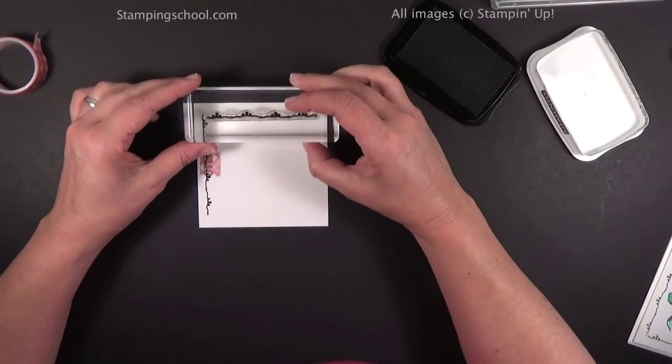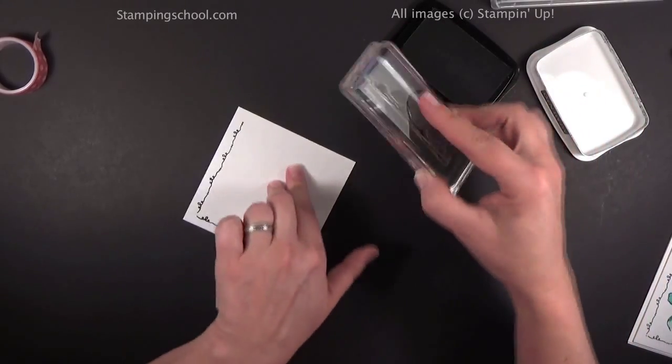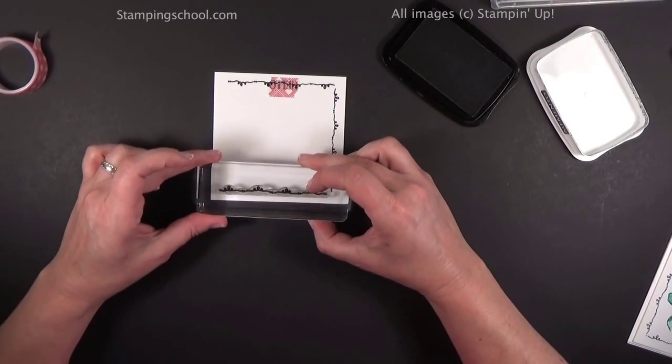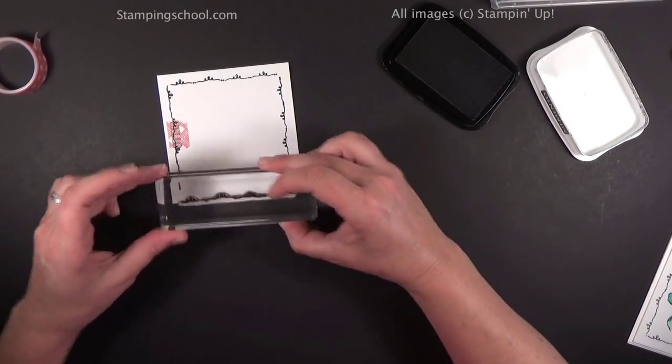This is a photopolymer stamp set, so it's great because you can see exactly where it's going. Go around all the way around. Like I said, it's just the perfect size, and get your little doodles done.